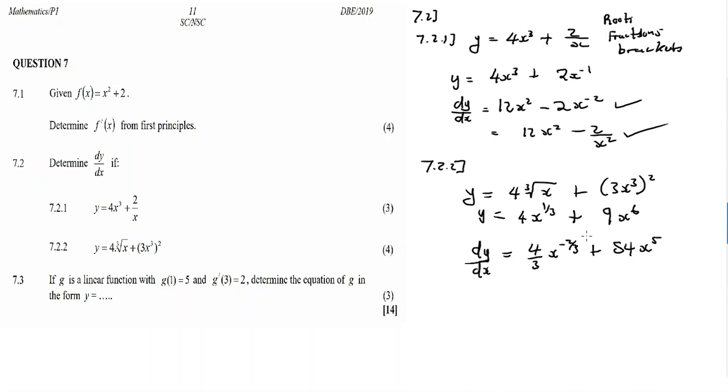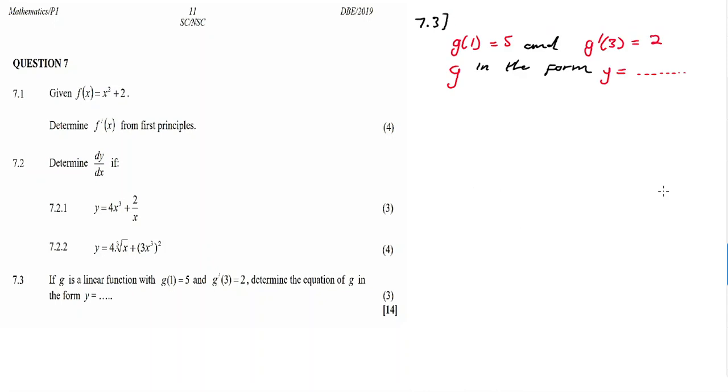Now dy over dx is equal to the first derivative, 1 over 3 times 4, 4 over 3x, and then it's 1 over 3 minus 1 equal to negative 2 over 3. And then plus, what is 9 times 6, 54x exponent 5. This is the final answer. Yeah, 6 times 9 is 54, yeah okay I'm just double checking, and then 6 minus 1, yeah it's 5.